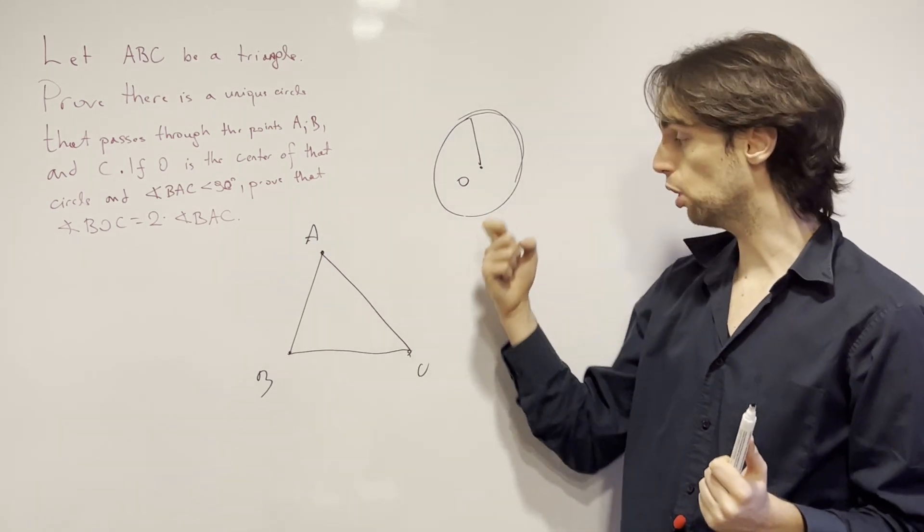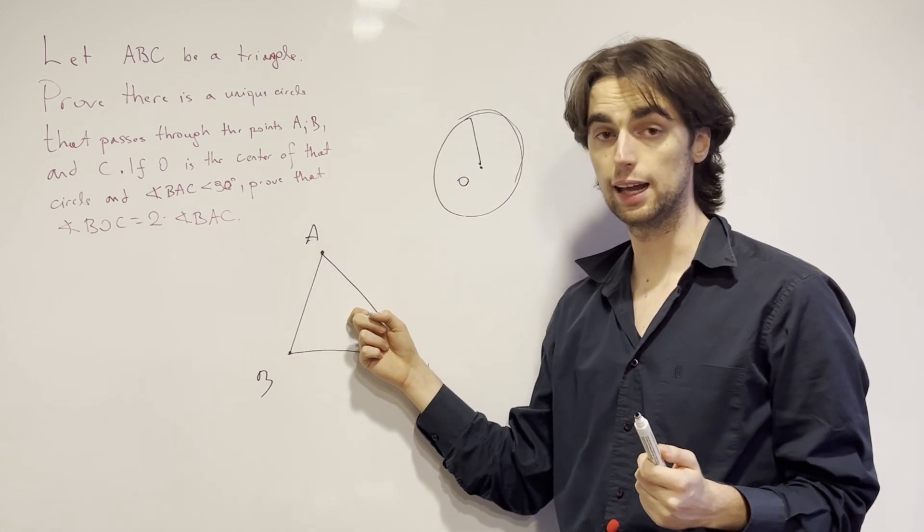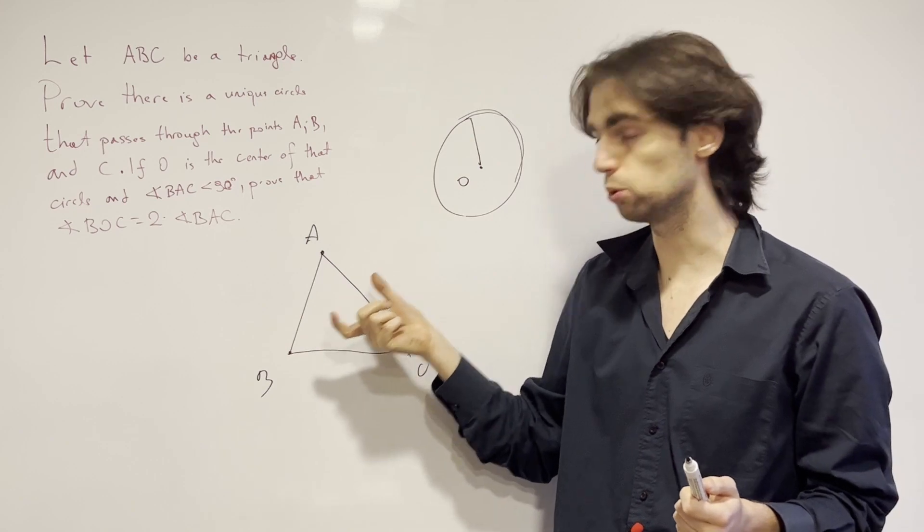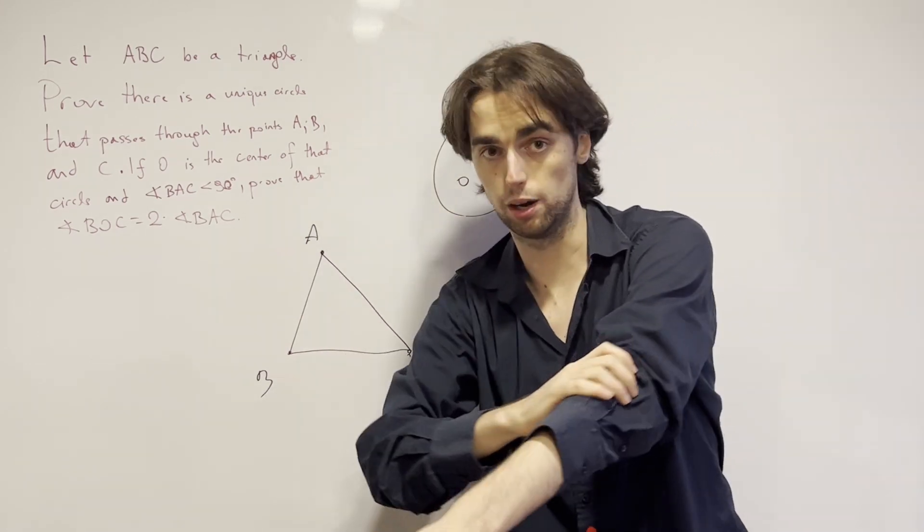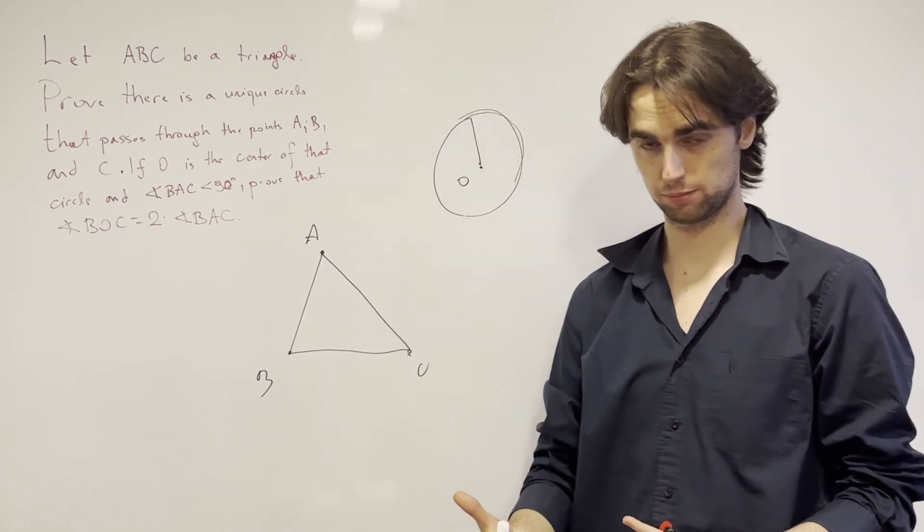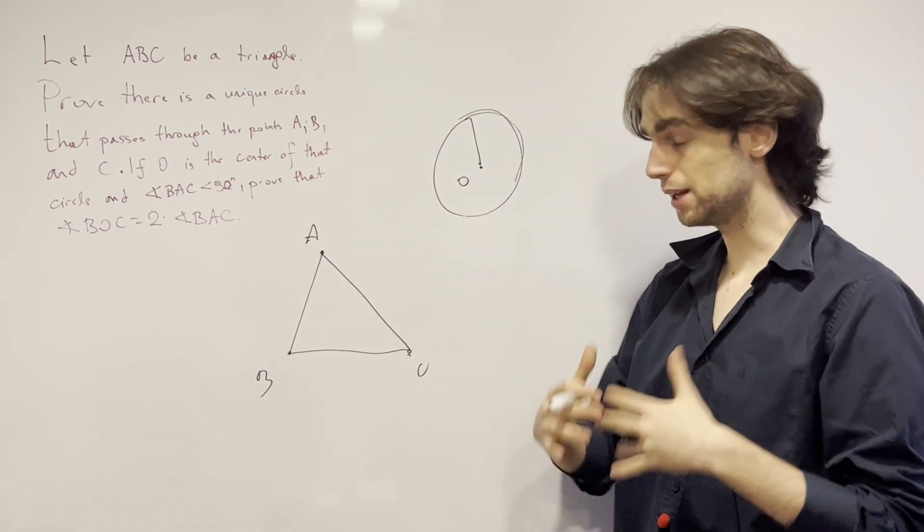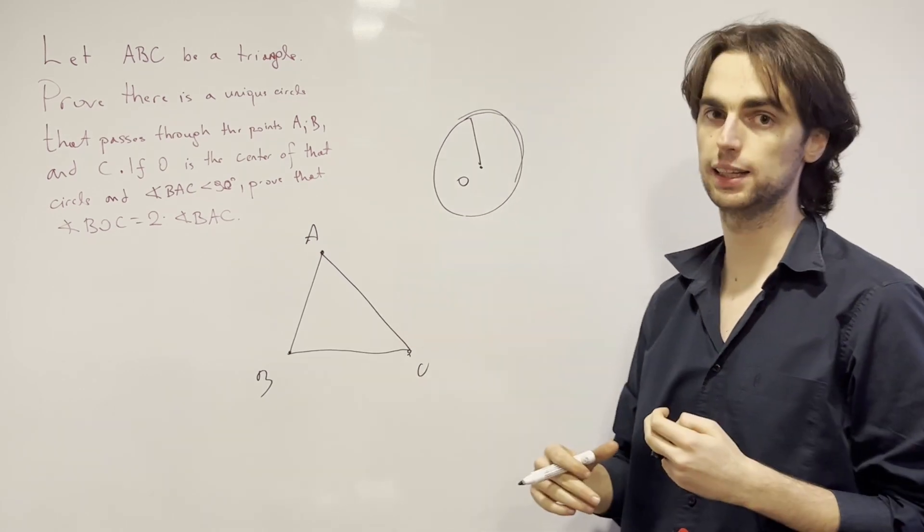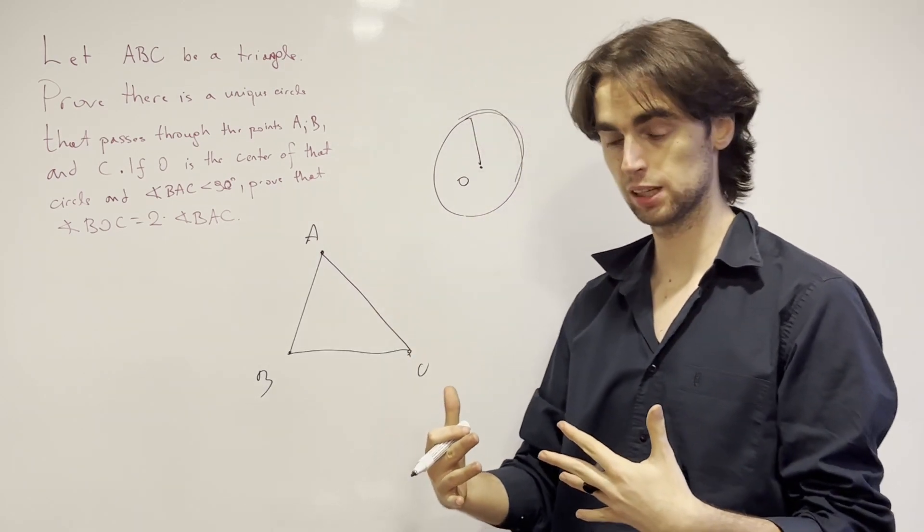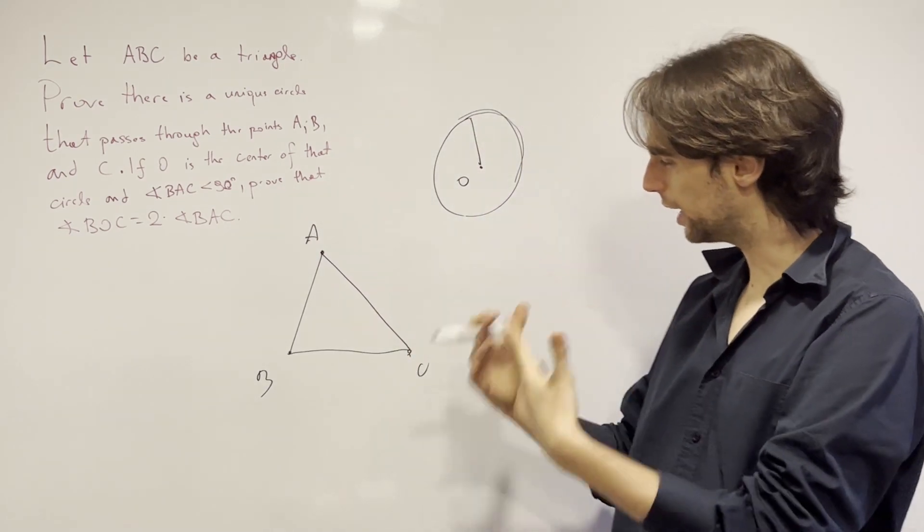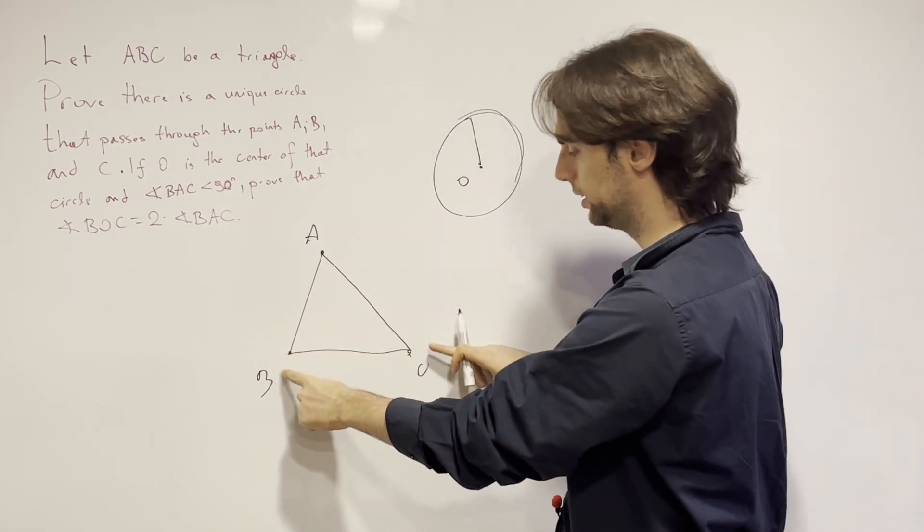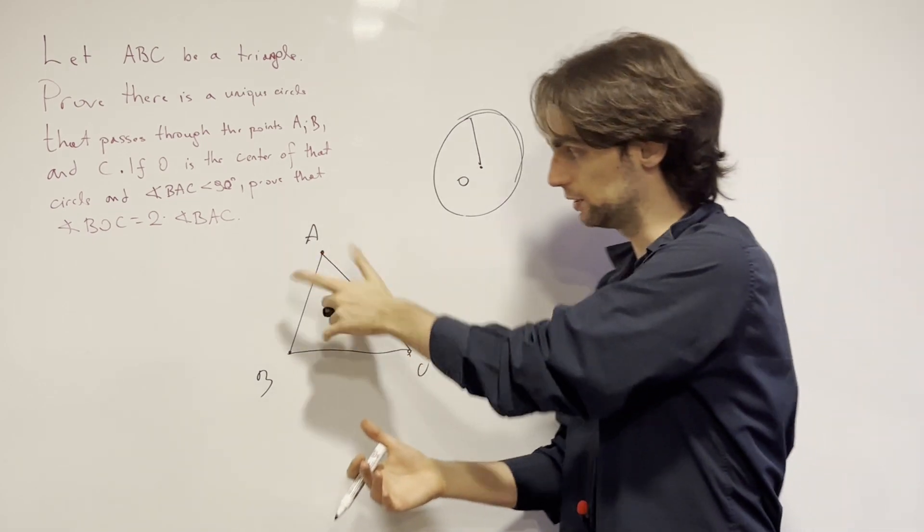And what does that mean? That means there's a unique point O and a unique radius R such that OA is equal to OB is equal to OC is equal to R. And how do we prove this? Now there are many ways we can go about this, but the way I would like to go about it is to say, what is O defined by? And the answer is, it's defined by being equidistant to these two points, these two points, and these two points, right? All pairs of these three points.